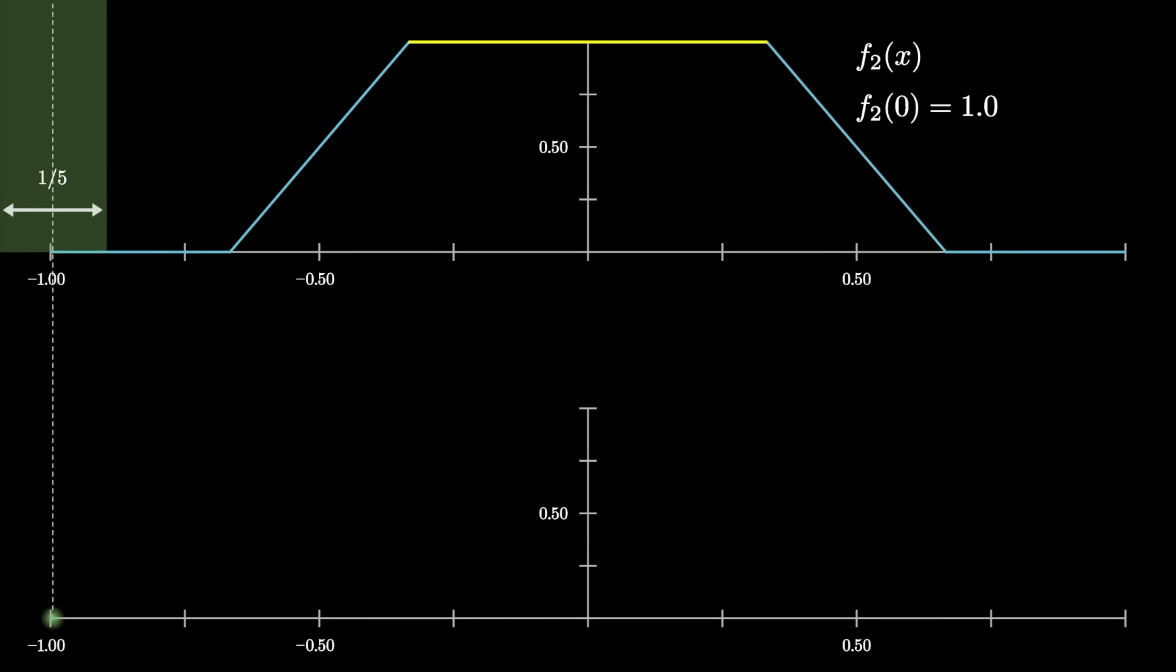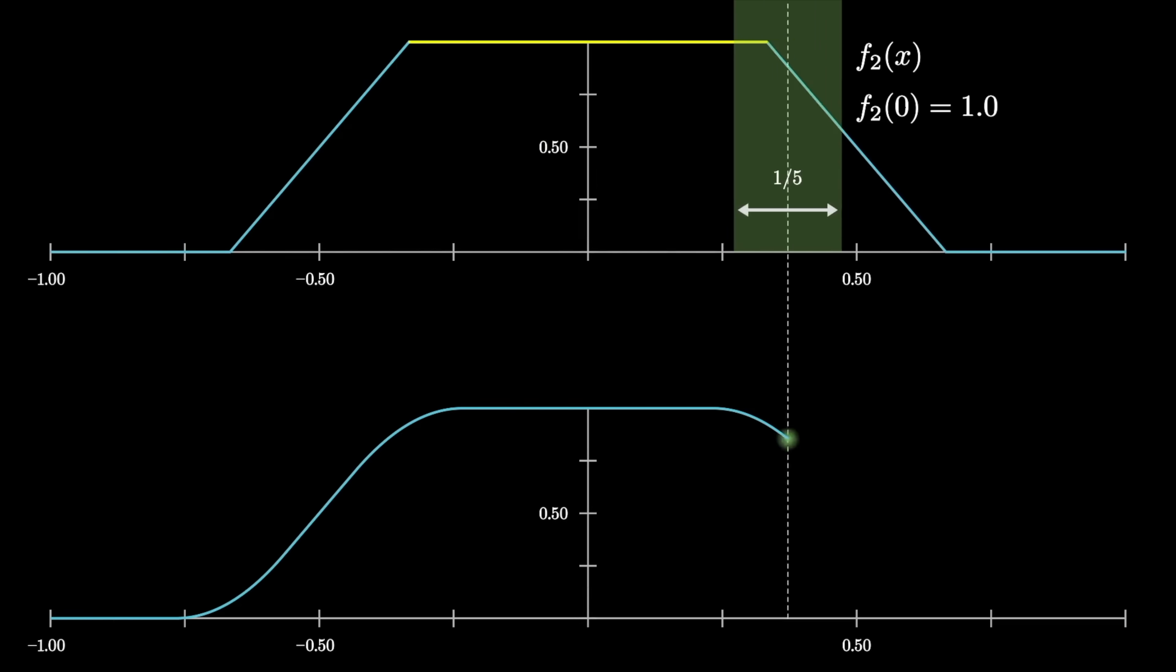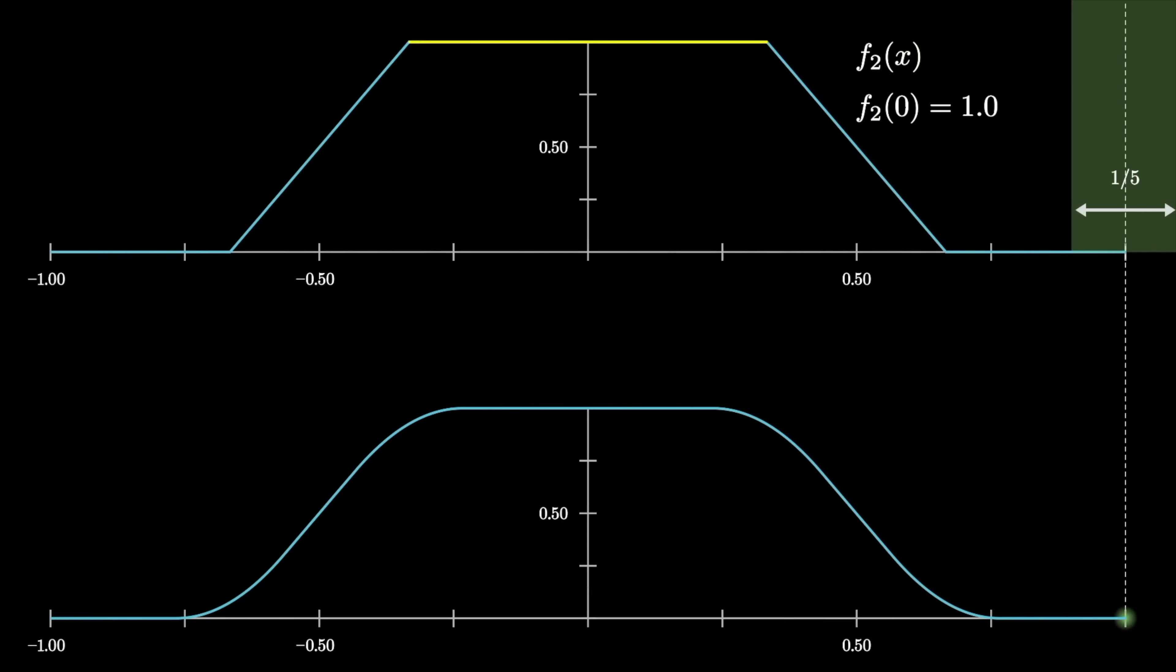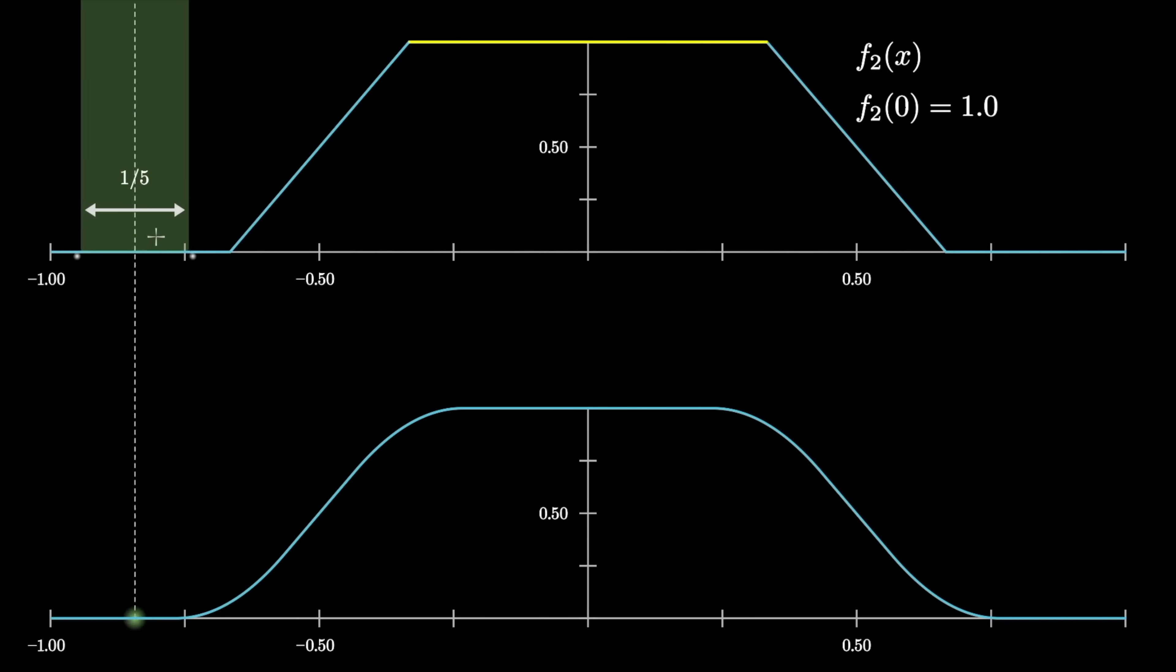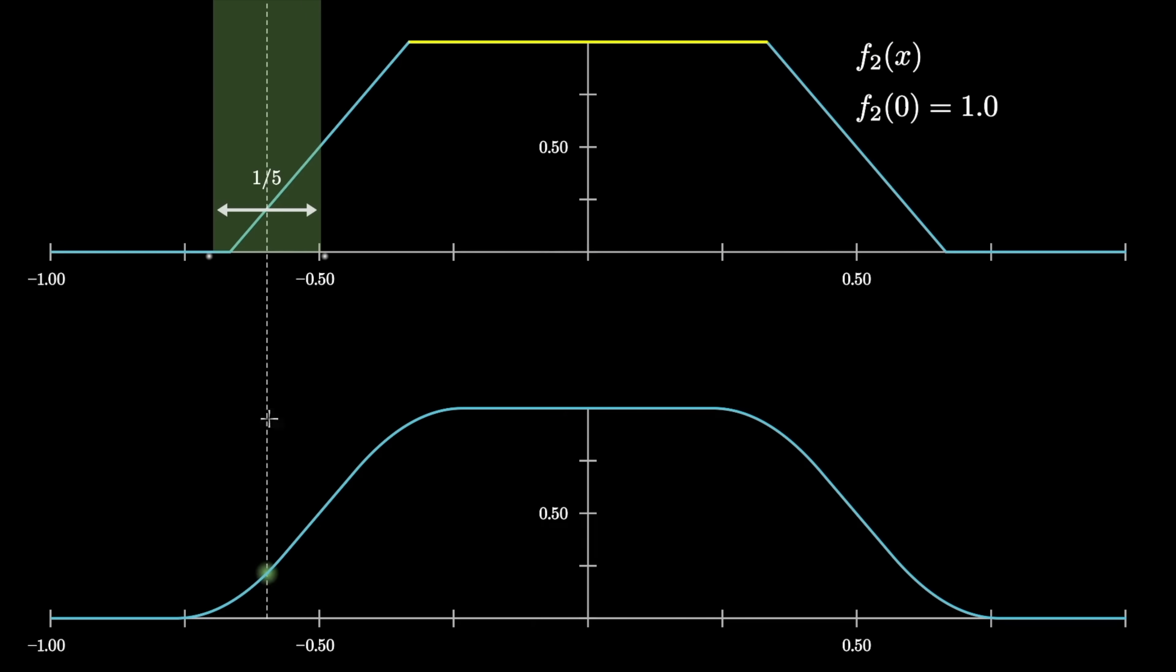For the next iteration, we're going to take a moving average of that last function, but this time with a window whose width is one-fifth. It's kind of fun to think about why, as you slide around this window, you get a smoothed-out version of the previous function.